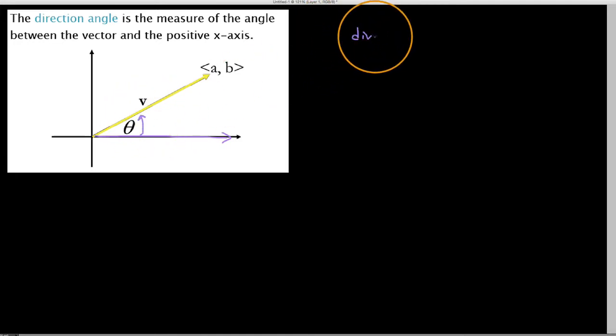As far as a direction angle is concerned, we say a direction angle is always somewhere between and including 0 degrees up to but not including 360 degrees, or you could say between 0 up to but not including 2π.